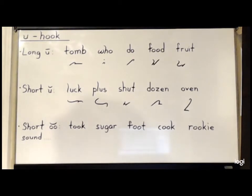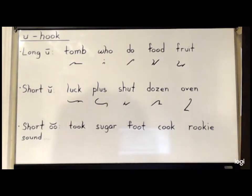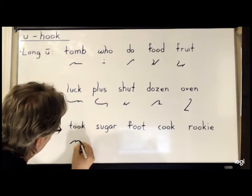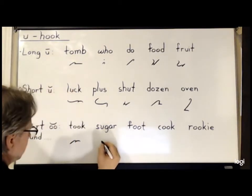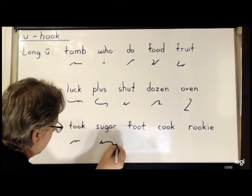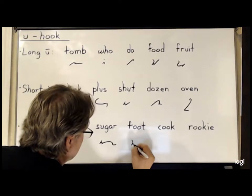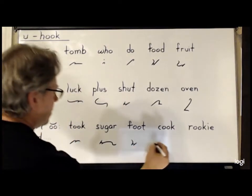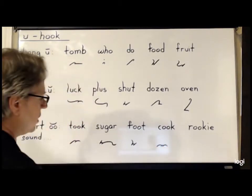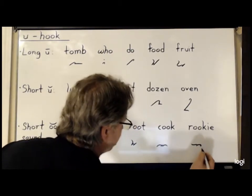And now for the short double-O sound, as in 'took' and 'sugar', we still use the U hook. So for 'took', it will be T-U-K. For 'sugar', S-H-U-G-R. For 'foot', F-U-T. For 'cook', K-U-K. And finally, 'rookie' is R-U-K and a small circle for the E.